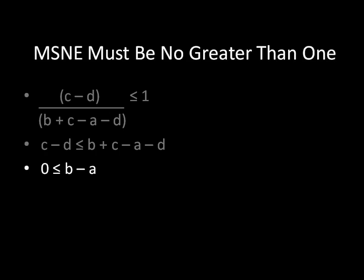And both sides of the equation contain a C minus D, so we can get rid of those. And that leaves us with A is less than or equal to B. And that definitely violates our rule that says that A must be greater than B, so we know that this mixed strategy is invalid.